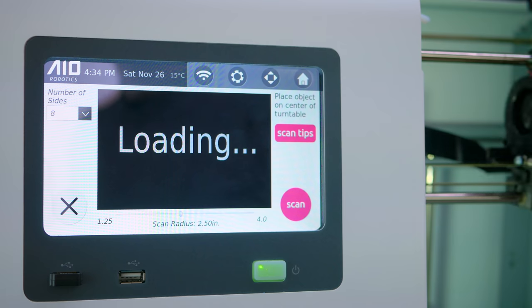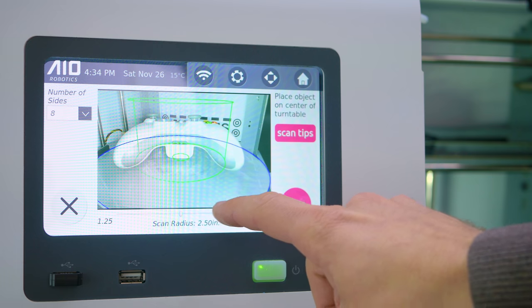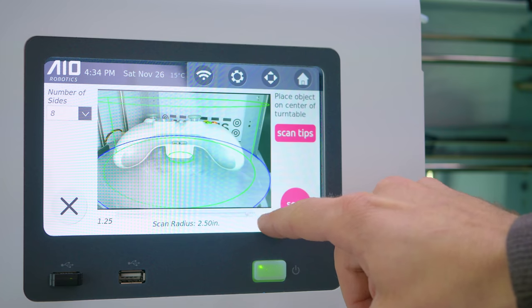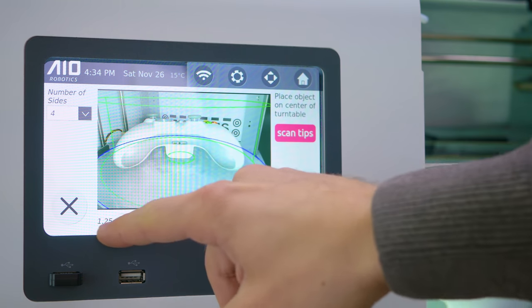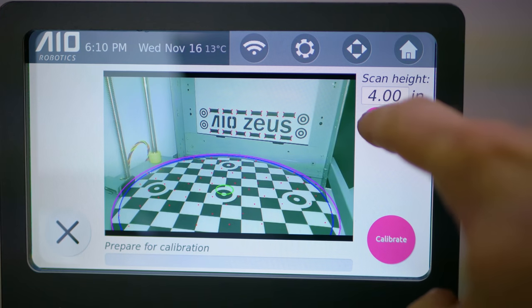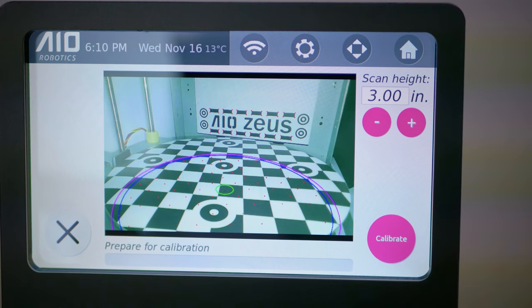Let's move on to the scanning part of the software, the other big menu point. You place your object onto the Zeus' build table, select a scan diameter to minimize ghost features that might be picked up from the background, pick how many sides the part should be scanned from and hit go. If you want to change the scan height, you have to recalibrate the entire scanner unit, which takes quite a while, so I rarely did that.